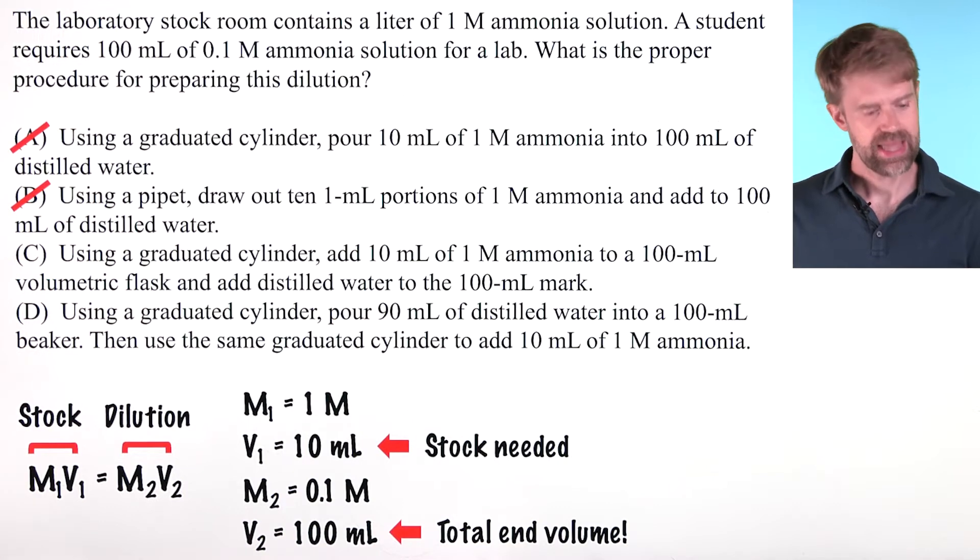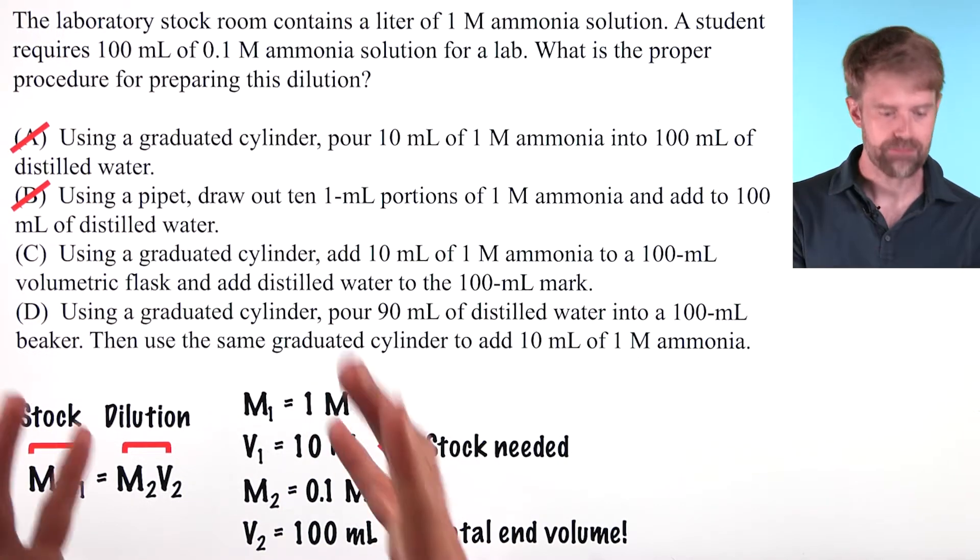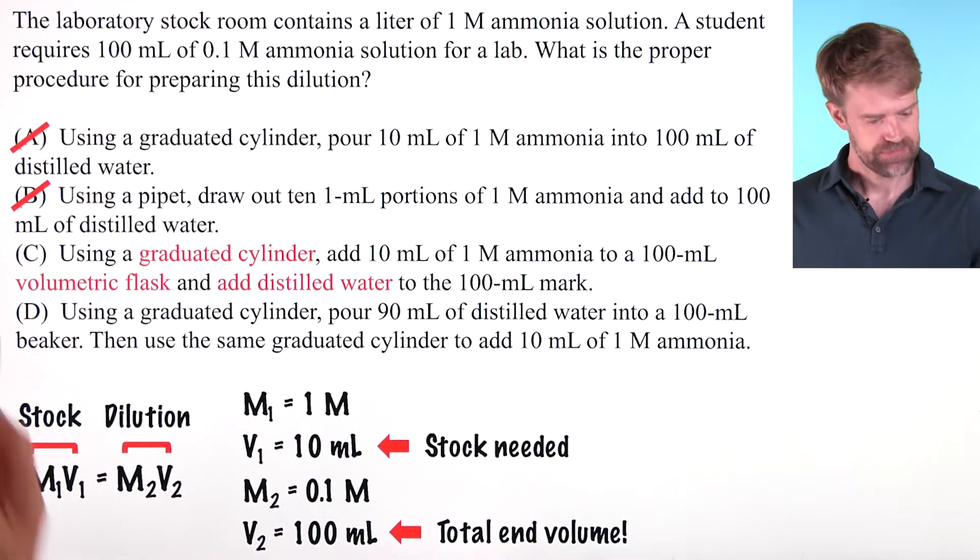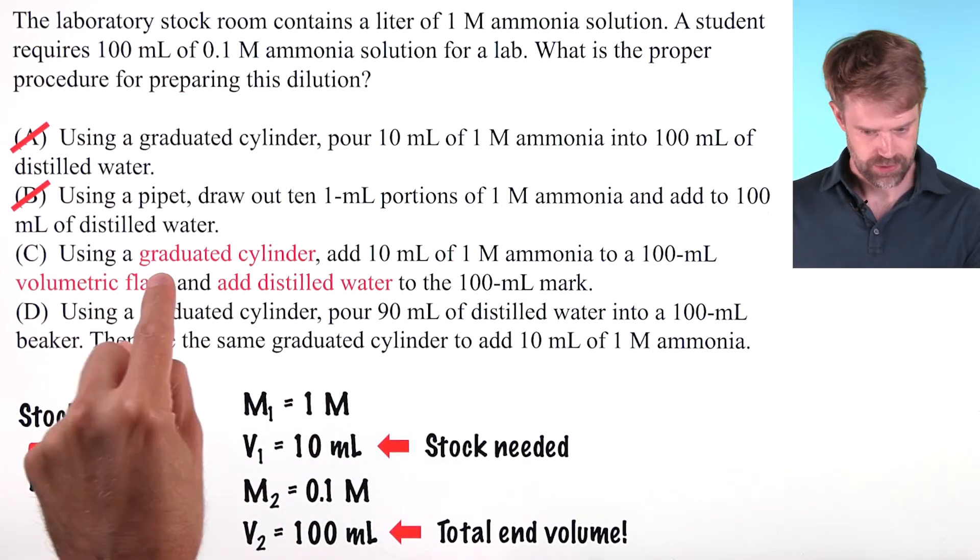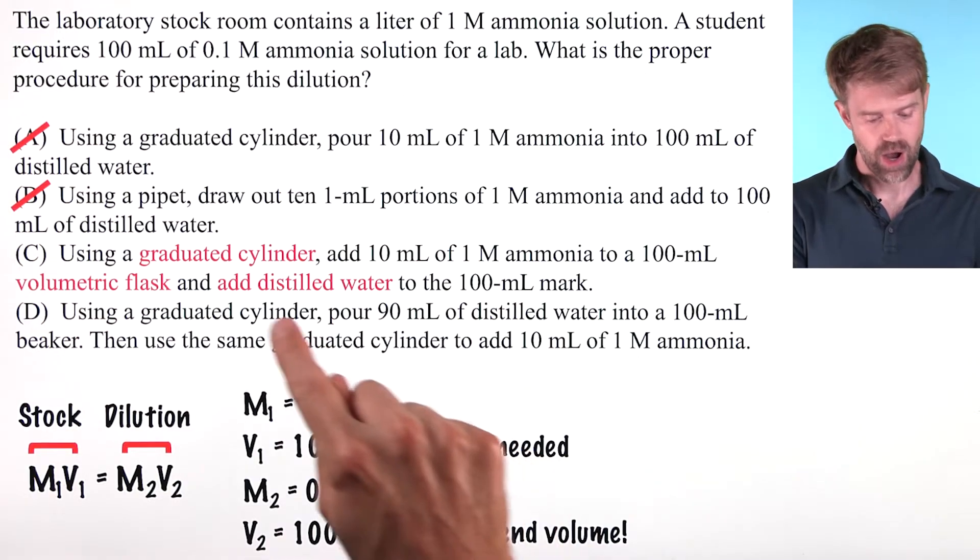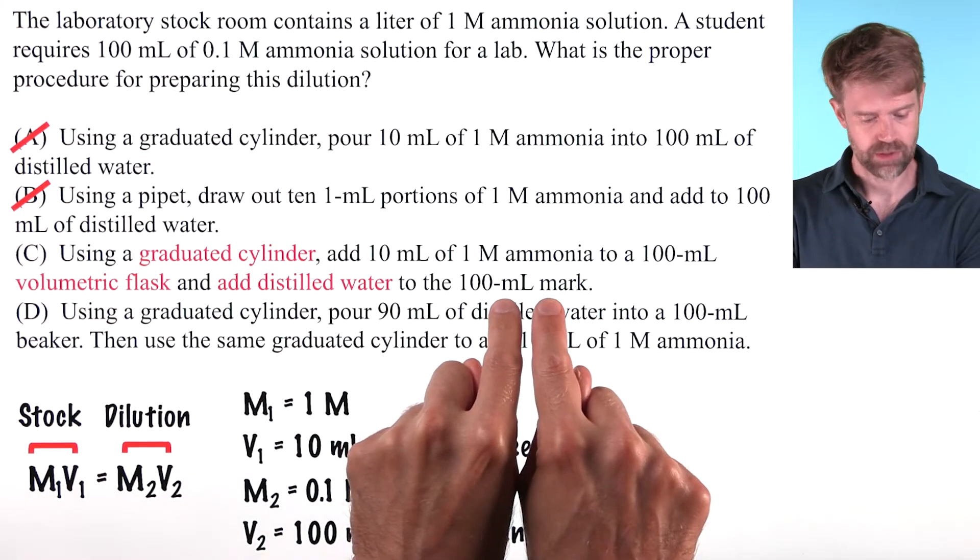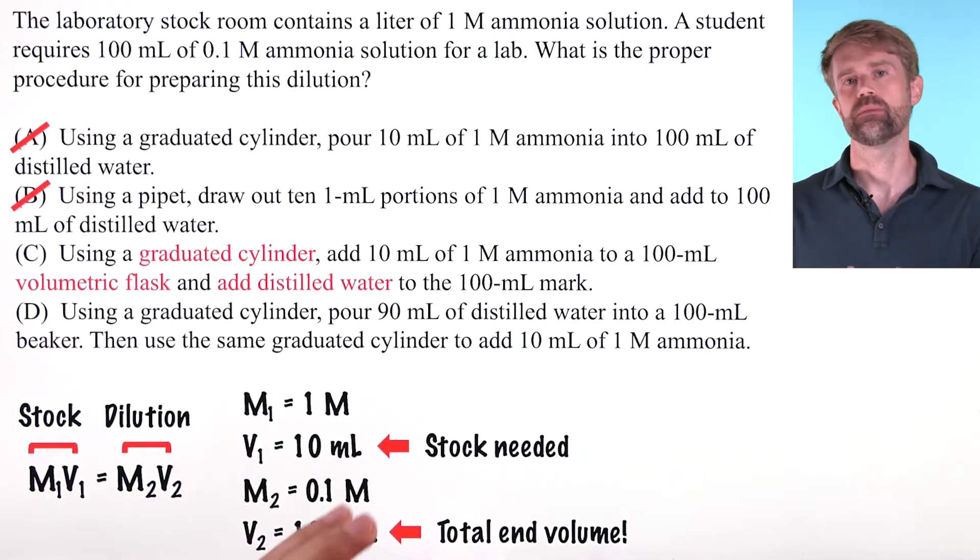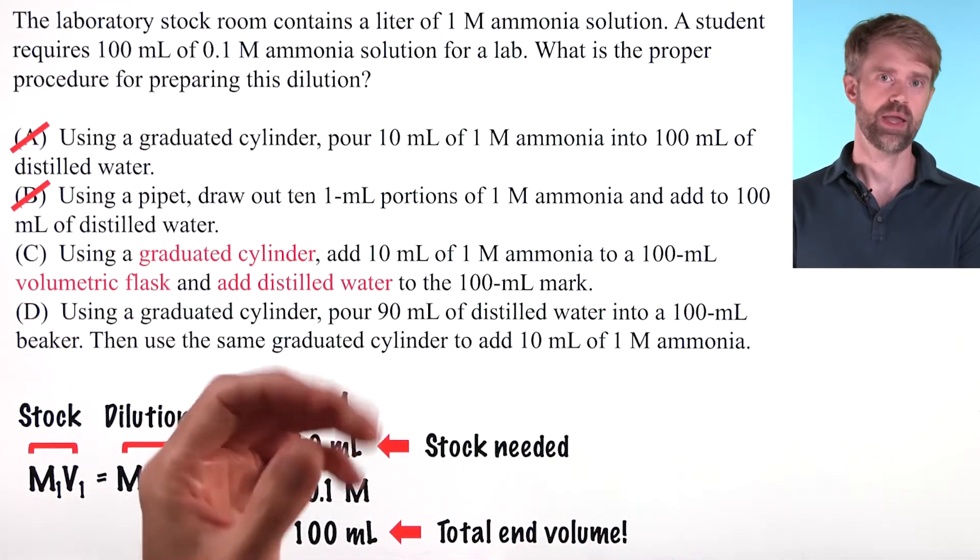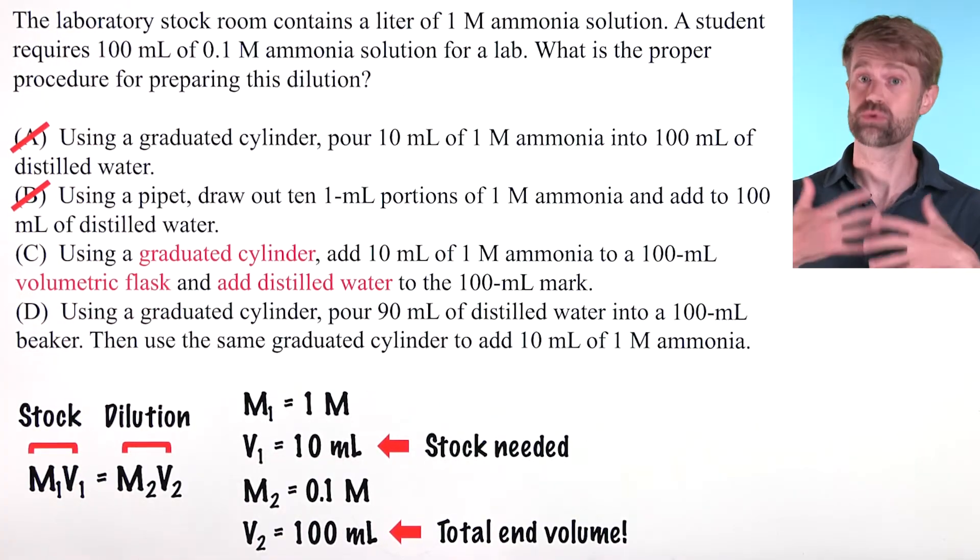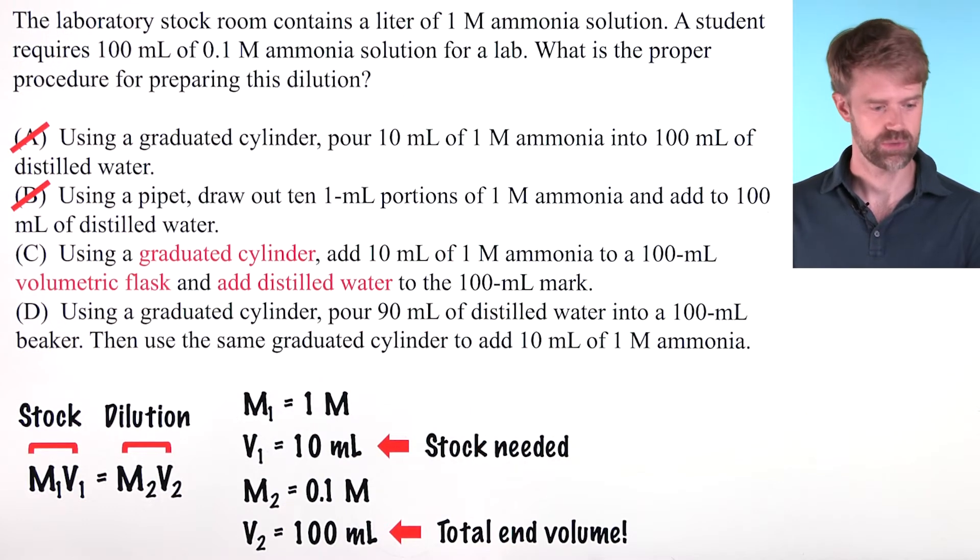So the important thing between C and D is the difference in equipment and procedure. Okay, let's look through these. In C, we measure the stock first with a graduated cylinder and then put it in a volumetric flask, then add up to the 100 milliliter mark with distilled water. This is the proper, best practice way to make a solution. Volumetric flasks are the preferred and correct glassware to use.